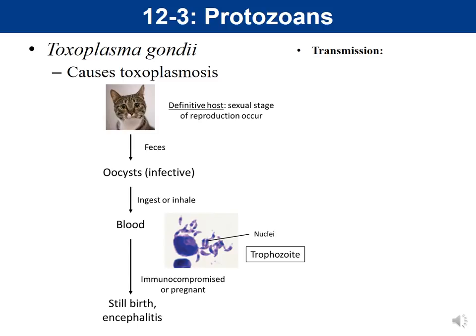The next organism is Toxoplasma gondii, which causes Toxoplasmosis. Its mode of motility is an undulating membrane, just like Trypanosoma. The stage you're responsible for on the exam is the trophozoite, which looks like a little crescent moon with a nucleus in the middle — typically seen in a blood smear surrounded by red blood cells. The other stage you need to know by name but not recognize is the oocyst, which is the stage infective to humans.